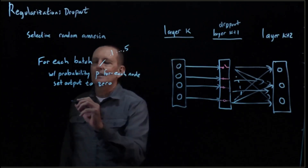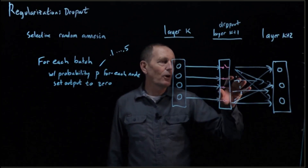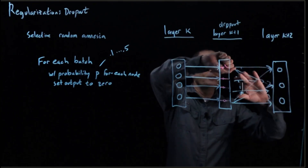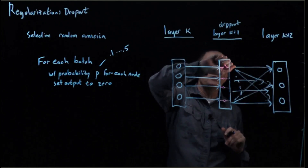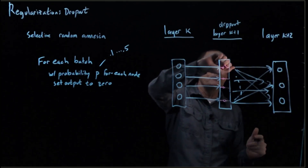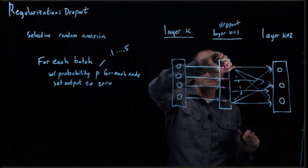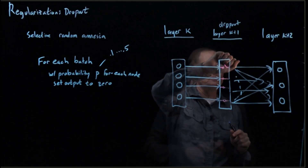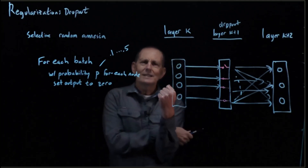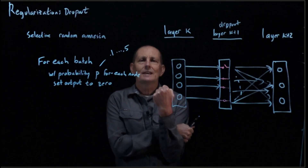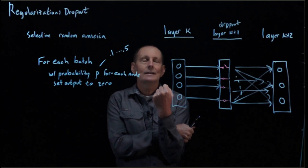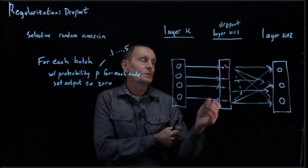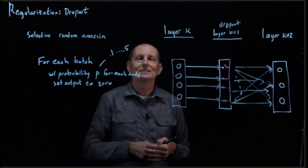What will happen then is we do our forward pass and our backward pass. On the forward pass, all inputs to the next layer from this zeroed node are going to be 0 — there is no component from this node into anything in later layers. Similarly, when doing backpropagation, the gradient stops here because this causes a gradient of 0. So for each batch we do this. Every single batch has its own network — the network changes slightly from batch to batch, depending on how many dropout layers we have and how high the probability p is.